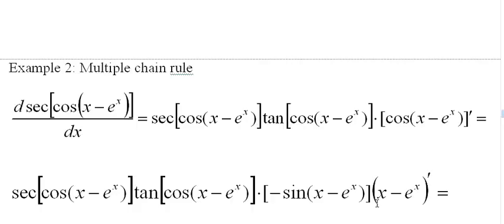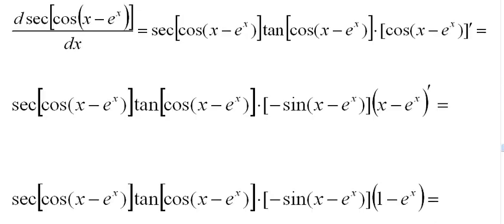But then we have to have the derivative of what's in here. The derivative of x minus e to the x. Notice I have it prime. The derivative of that of course is 1 minus e to the x. And there we have it.